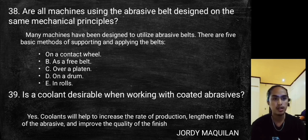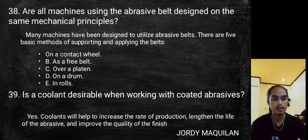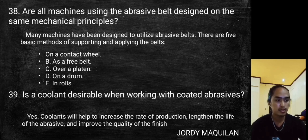The five basic methods of supporting and applying abrasive belts are: on a contact wheel, as a free belt, over a platen, on a drum, and on rolls. Coolants will help to increase the rate of production, lengthen the life of the abrasive, and improve the quality of the finish.